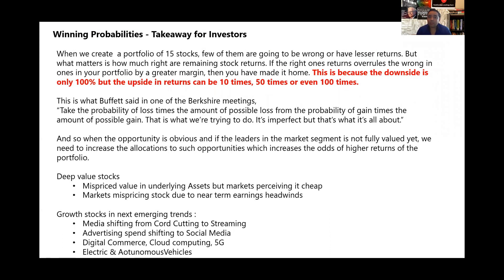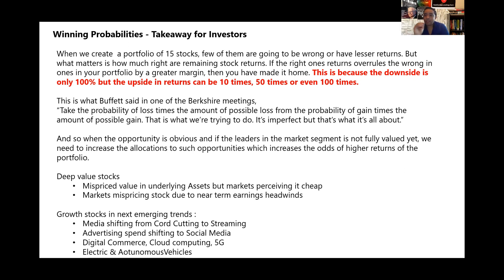Now let's see how to increase your winning probabilities when it comes to investing — how to apply probabilities to increase your chances of higher returns. When we create a portfolio of 15, 20, or 25 stocks, a hypothetical example: a few of them are going to be terribly wrong — they'll have lesser returns or even go to zero. But what really matters is that the ones you're getting right should really hit it out of the park. If the right ones overrule the wrong ones by a greater margin — which is usually the case, since 80% of returns from a portfolio come from 20–25% of stocks — then you have made it home.